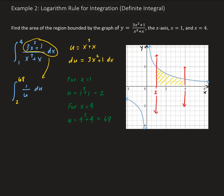So now we can go ahead and integrate 1 over u, so that's going to be the natural log of the absolute value of u. Evaluate from 2 to 68. So we have natural log of 68 minus the natural log of 2. And so this is the same as natural log of 68 over 2, which is equal to the natural log of 34.